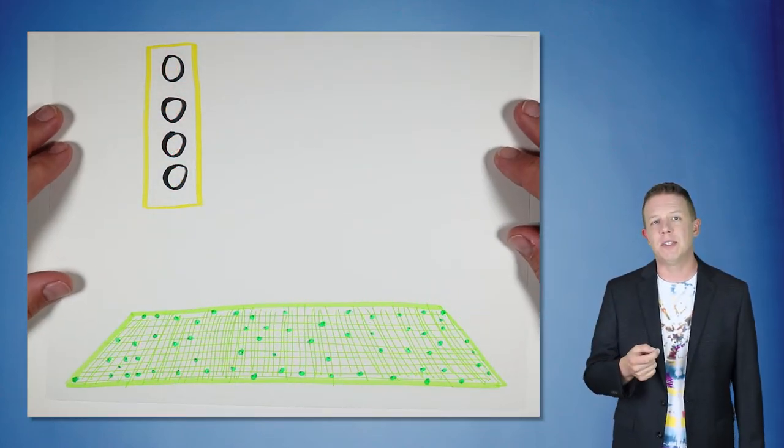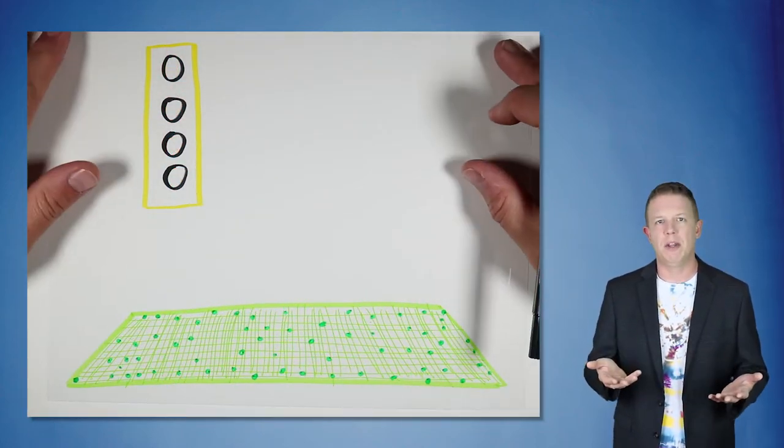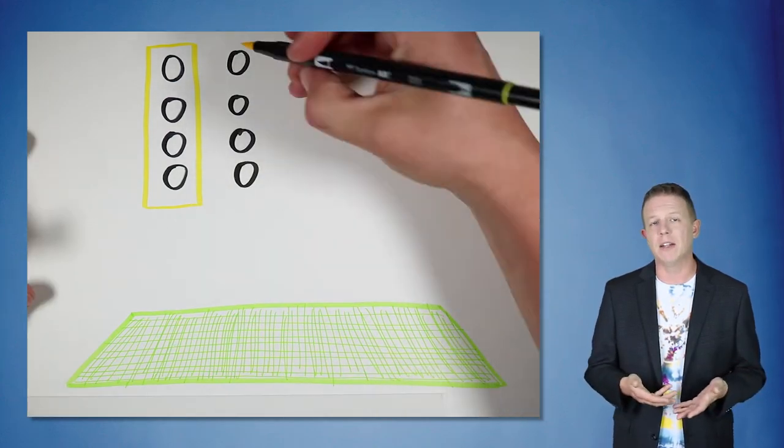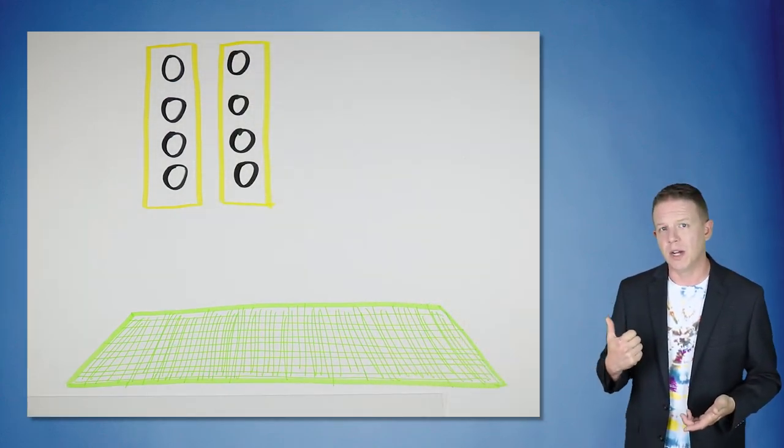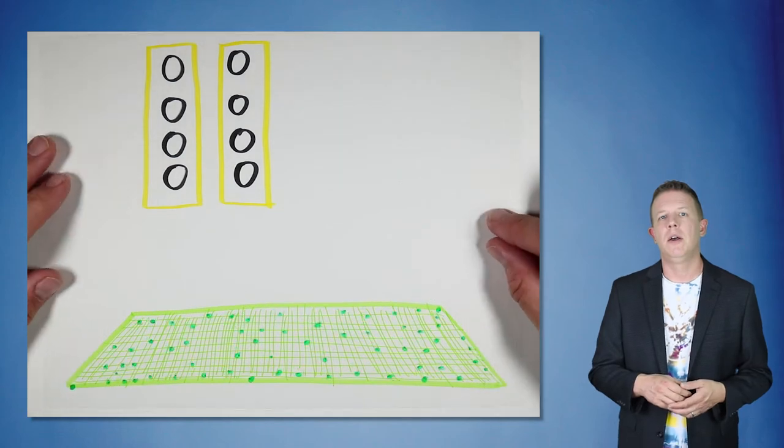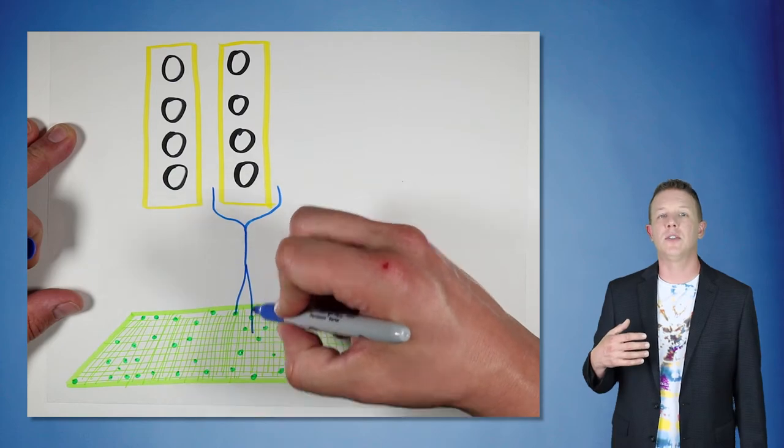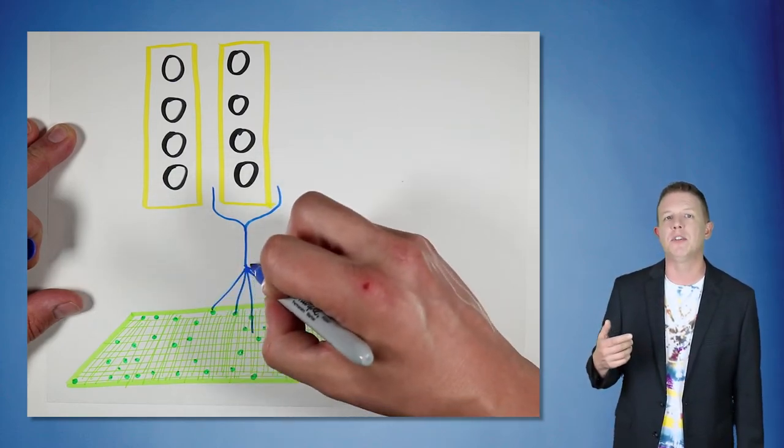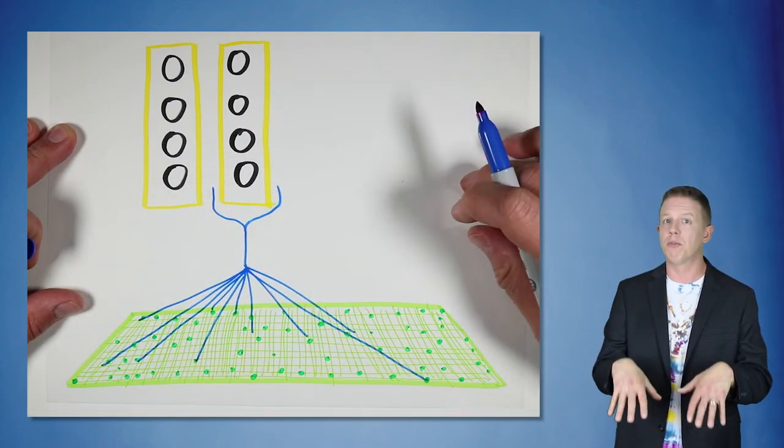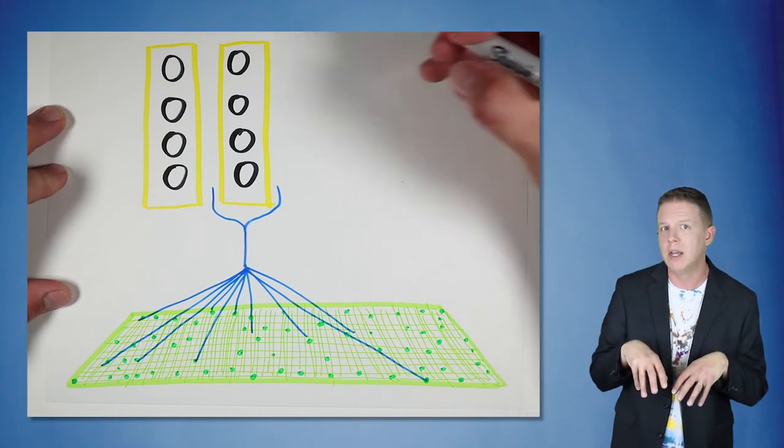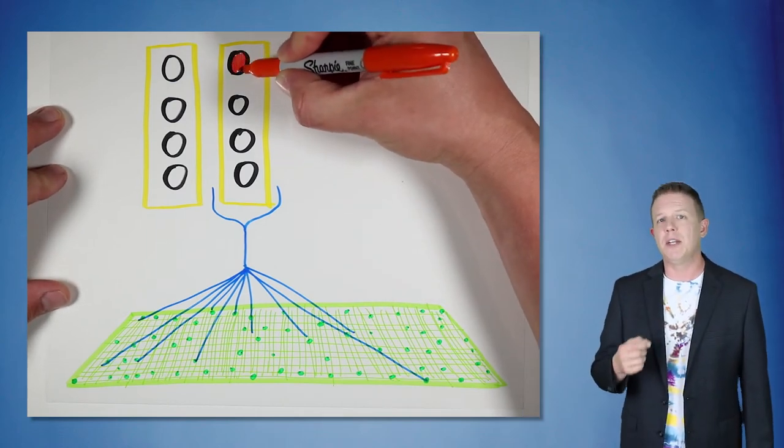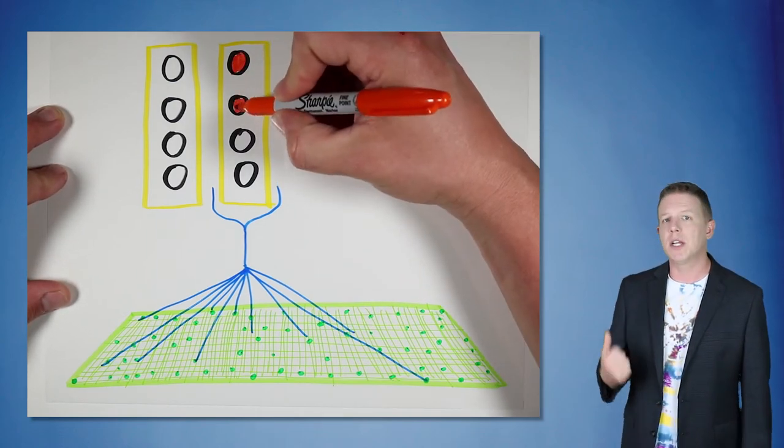Moving on to the next time step, we get a new spatial input and another set of columns are activated. Here's one of those columns. Once again, this minicolumn, among others, was activated because it recognized a certain spatial feature in the input space through its feedforward proximal dendritic segments. Again, this spatial feature was not predicted, so the column bursts.